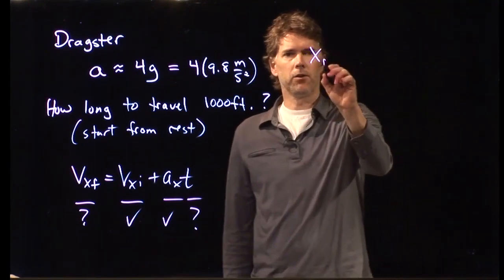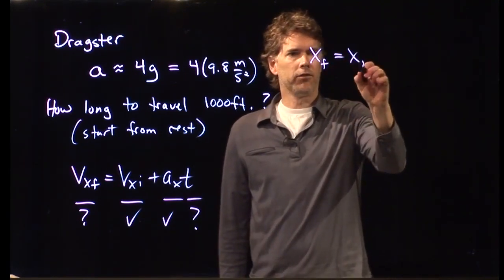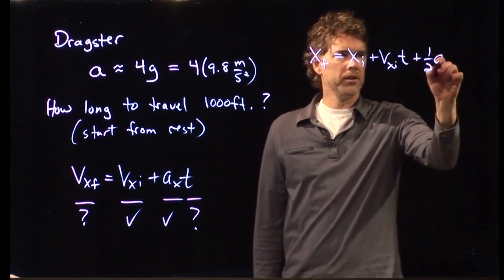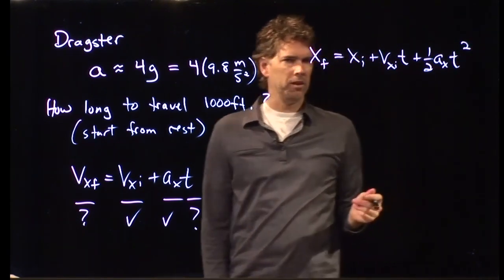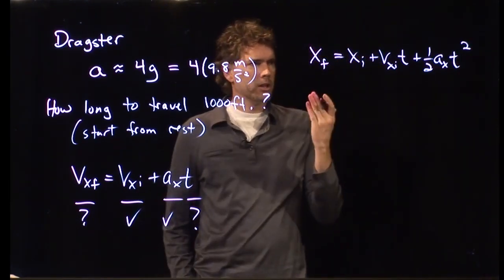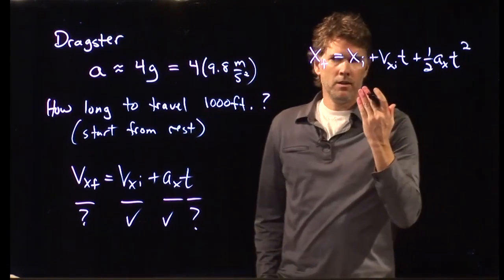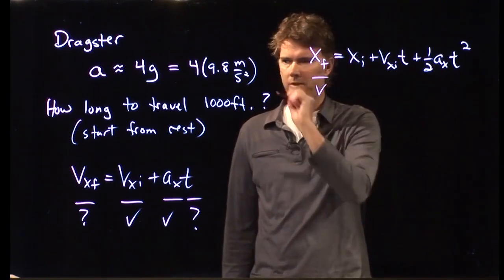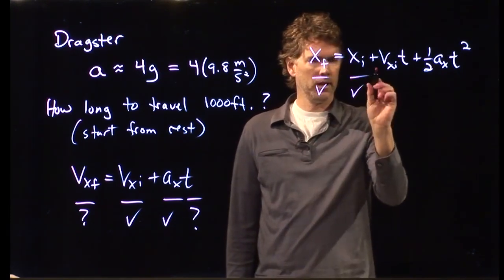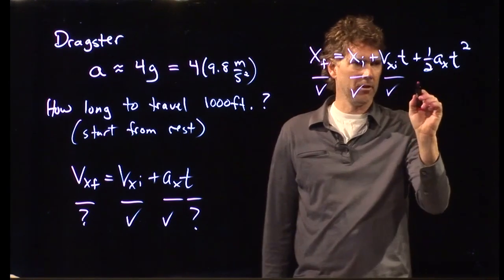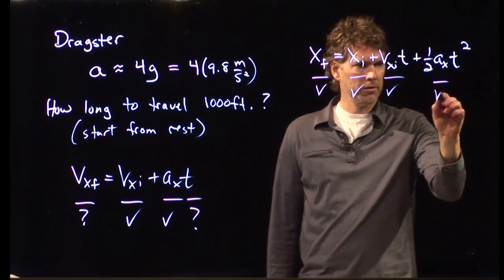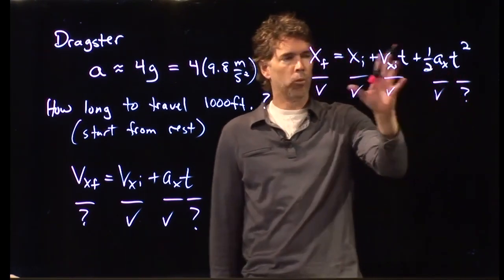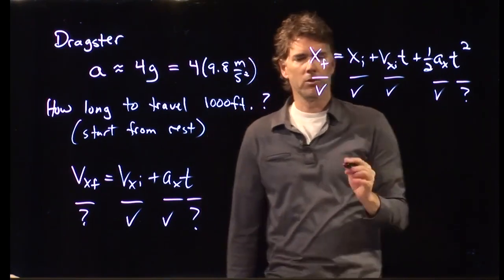So, instead, let's go to this equation. x final equals x initial plus vx initial times t plus 1 half a sub x t squared. And let's look at this equation and figure out what we know and what we don't know. We know this, 1,000 feet. We know this, that's zero. We know this, that's zero. We know this, acceleration. We don't know time. So, we have one unknown in this equation, and so we can solve it for time.